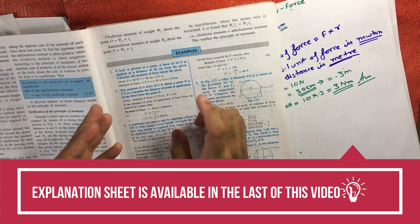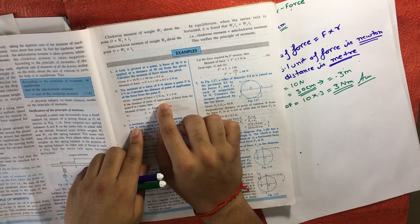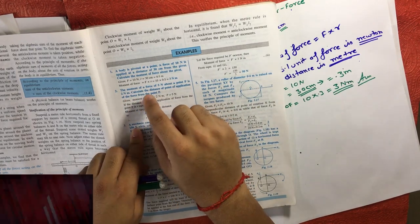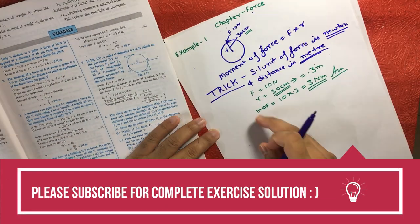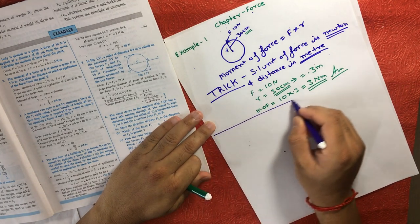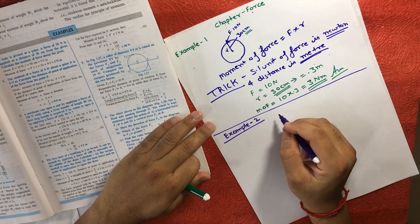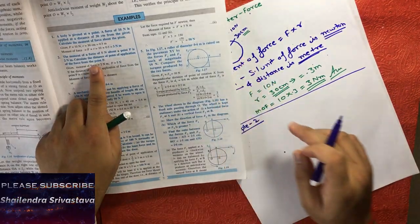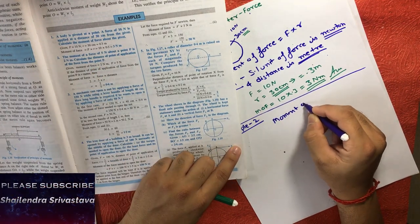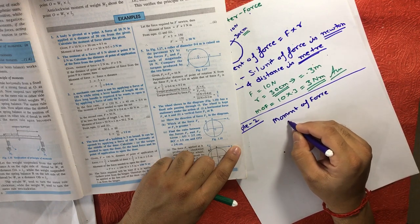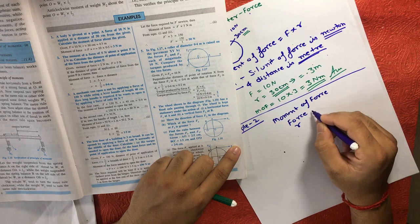'The moment of a force of five newton' means there is a force of five newton being applied. 'About a point is two newton meter' means the moment of force about the point is two newton meter. That is the only trick in this question. The formula is: moment of force equals force into distance. So you need to understand what value represents what. In this example number two, we have three quantities: moment of force, force, and distance r.